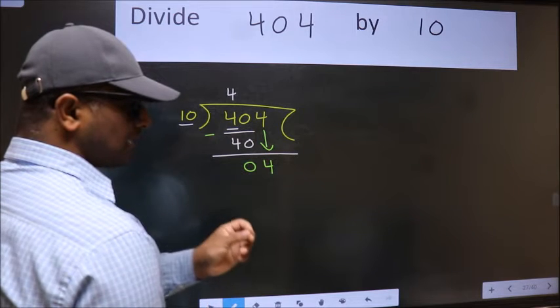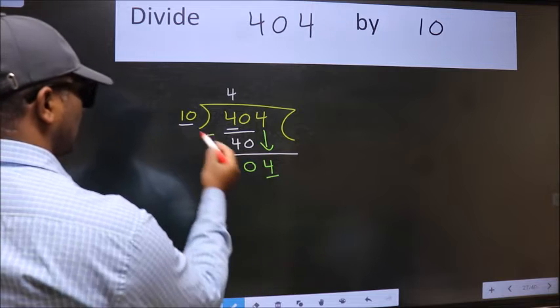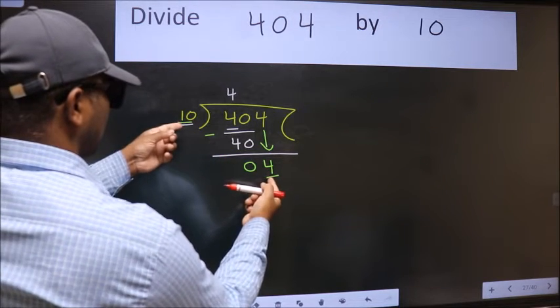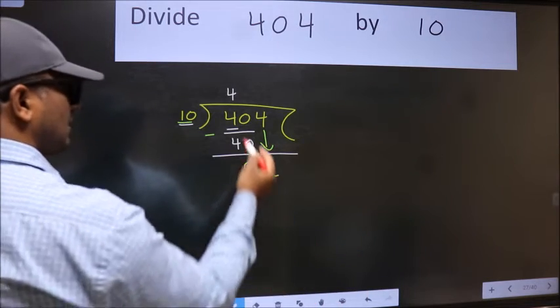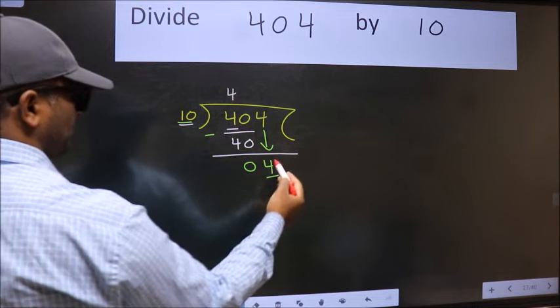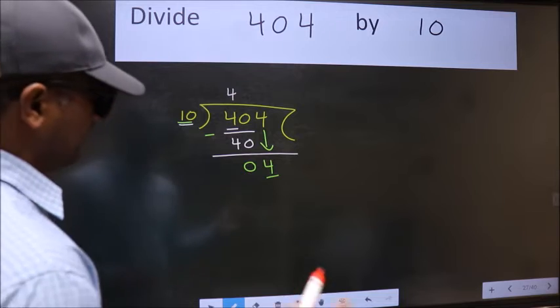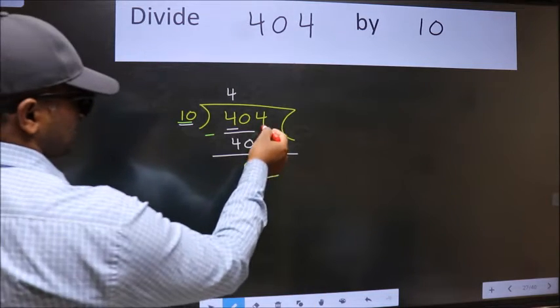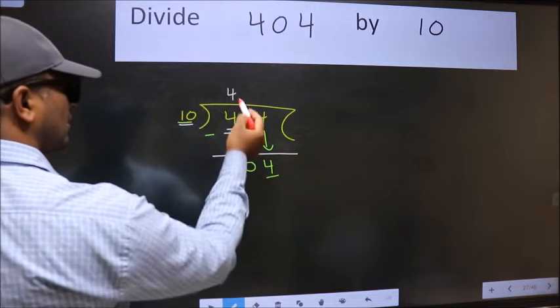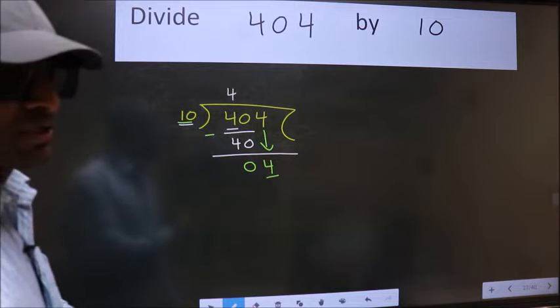the mistake happens. And the mistake is this. Here we have 4 and here 10. 4 is smaller than 10. So what many do is they directly put dot, take 0. Which is wrong. Why is it wrong? Because just now you brought this number down. And in the same step, you want to put dot, take 0. Which is wrong.